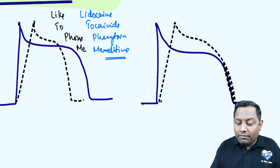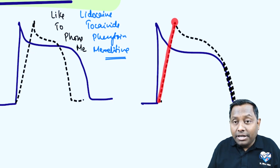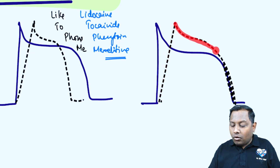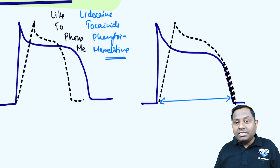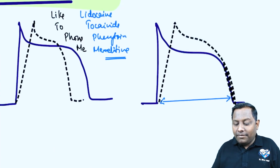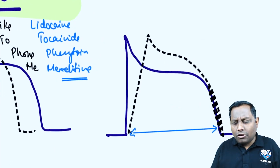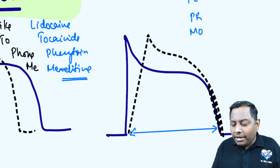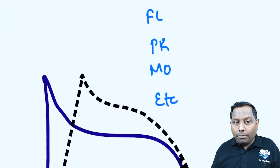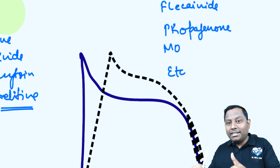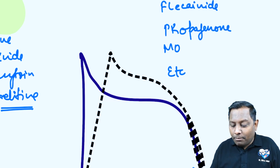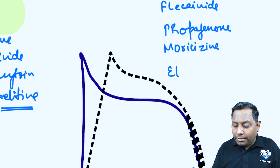Class 1c anti-arrhythmic drugs have only sodium channel blockade. There is only a decrease in the slope of depolarization but no effect on overall action potential duration — it remains the same. The Class 1c drugs, remembered as c-grade activities like 'floor mopping,' include Flecainide, Propafenone — whose name and structure resemble Propranolol giving it beta-blocking property — and Moricizine.